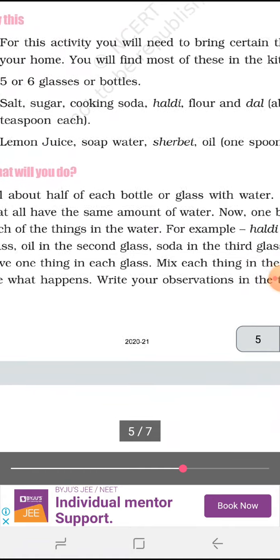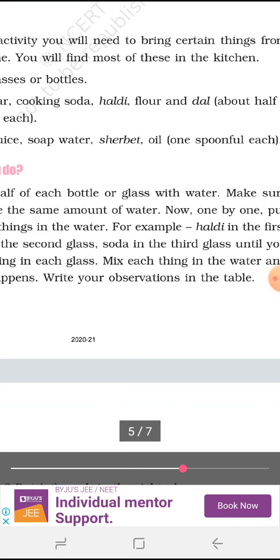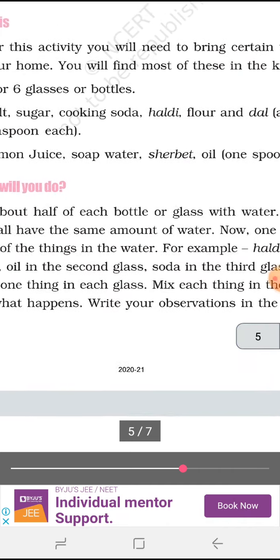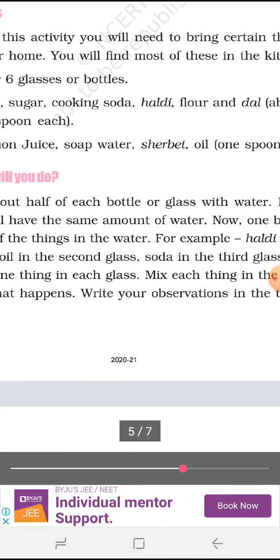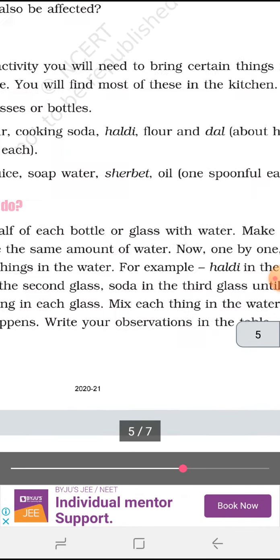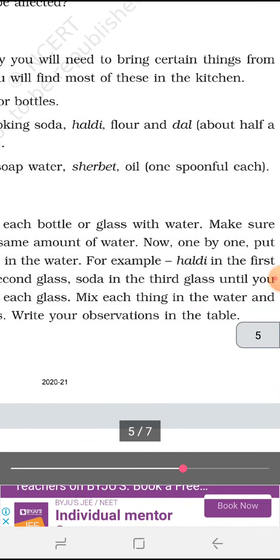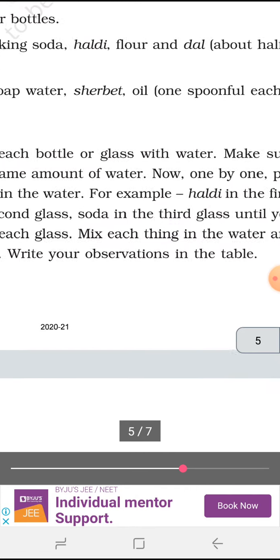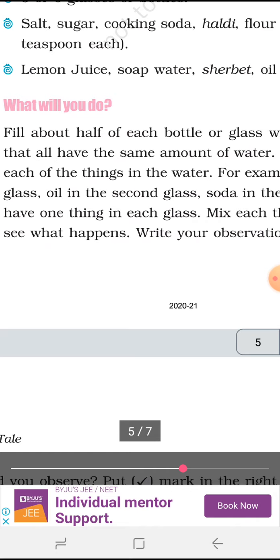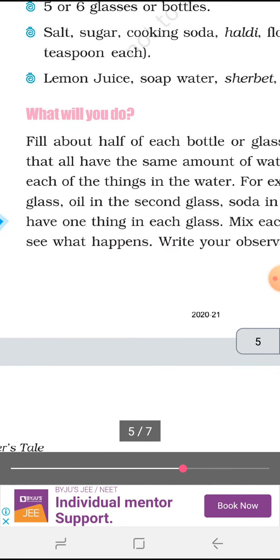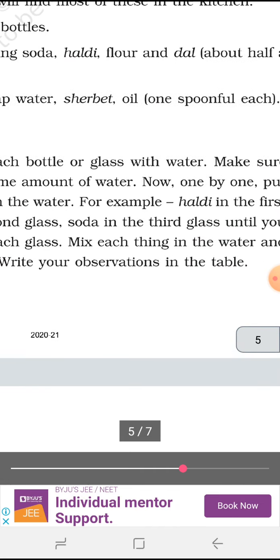What to do? Fill about half of each bottle or glass with water. Now six glasses you are having. You can do it at home also, but don't spoil the things. Ask your mama to give you few things to do this experiment. Let's take the glass of water inside the bottles. We take glass or bottle and fill it in half a cup of water. Make sure that all have the same amount of water. If you are taking five glasses, then we need to take the same amount of water. Now, one by one, put each of the things in water. For example, one by one, put each of the things in water. Mix each thing in the water and see what happens.